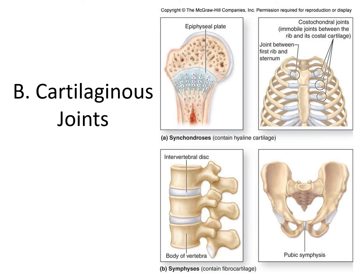Next we have cartilaginous joints — two types. The first is synchondrosis, where 'syn' means fusion. These joints made of hyaline cartilage have very little movement. The first example is the epiphyseal plate, connecting the epiphysis and diaphysis of a bone — we hope there won't be any movement there, as that would be a problem. The second example is the connection between the costal cartilage and the rib — the costal cartilage itself will flex a little as you breathe, but the connection between the costal cartilage and the rib shouldn't move. If it does, the costal cartilage can separate from the rib, which can happen in an impact accident.